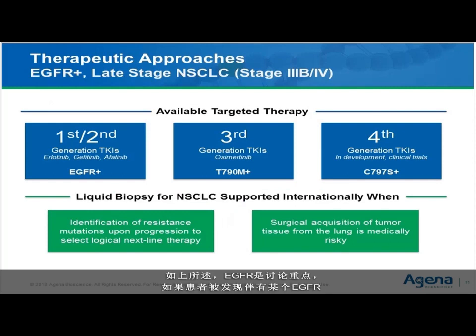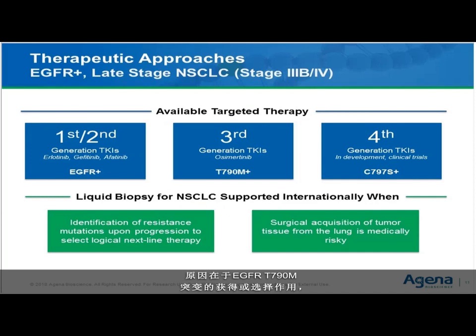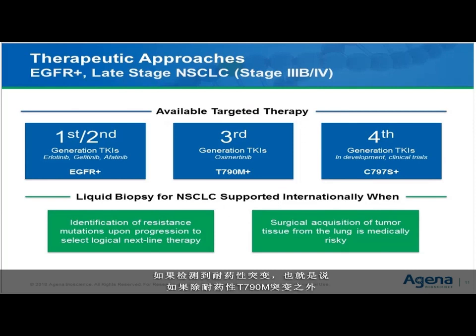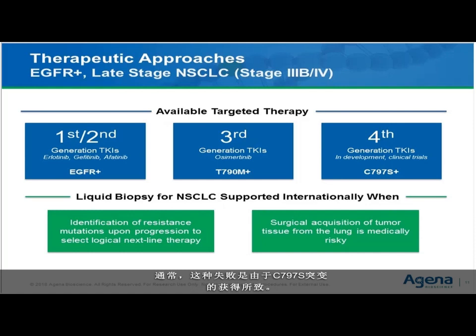EGFR is our focus, and when an EGFR activating or sensitizing mutation is observed, those patients respond to EGFR tyrosine kinase inhibitor therapies and are generally put onto first- or second-generation TKI — erlotinib, gefitinib, or afatinib. However, the vast majority of patients will progress, and the main cause for progression is the acquisition of the T790M EGFR mutation that weakens or prevents the drugs from binding. If the sensitizing EGFR mutation in addition to the T790M resistance mutation are detected, patients move on to third-generation TKI, osimertinib, an irreversible EGFR TKI not resisted by T790M. But again, those patients ultimately fail therapy.